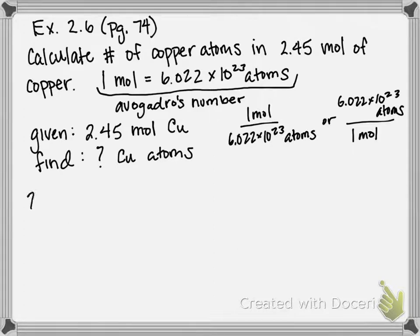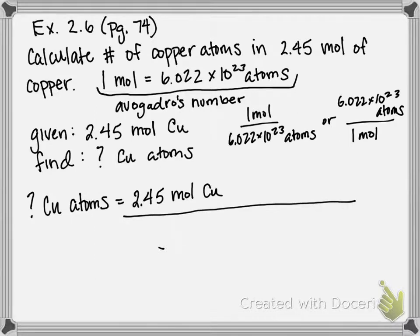So I'm looking for number of copper atoms, and I'm starting with 2.45 moles of copper. So just like for unit conversions, I'm going to have my railroad track. What I want to cancel, the unit I want to cancel, goes on the bottom.